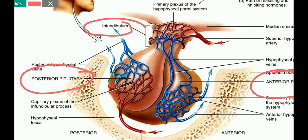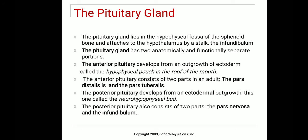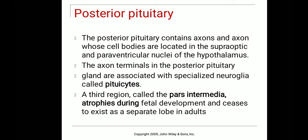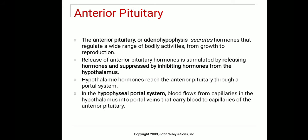Directly from the hypothalamus, neurosecretory cells enter into the posterior pituitary, which only stores and releases hormones whenever necessary. The anterior pituitary, also called the adenohypophysis, is stimulated by releasing hormones and inhibited by inhibiting hormones, both of which are released from the hypothalamus.